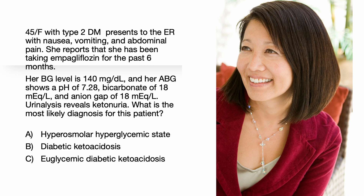A 42-year-old female with type 2 diabetes presents to the ER with nausea, vomiting, and abdominal pain. She reports taking dapagliflozin, an SGLT2 inhibitor, for the past 6 months. Her blood glucose level is 140, and her ABG shows a pH of 7.28, bicarbonate of 18, and an anion gap of 18. Her urinalysis reveals ketonuria. What is the most likely diagnosis: hyperosmolar hyperglycemic state, diabetic ketoacidosis, or euglycemic diabetic ketoacidosis? The correct answer is C, euglycemic diabetic ketoacidosis.